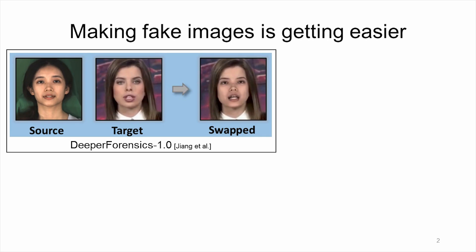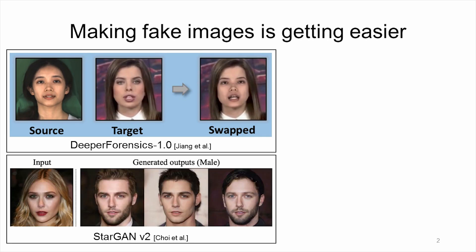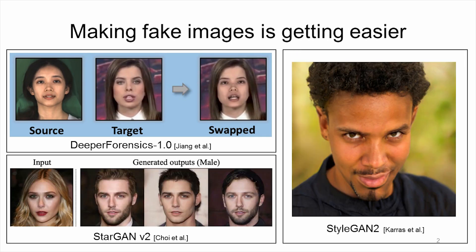We've been seeing lots of exciting ways to manipulate images with CNNs, but this leads to a dilemma. As such methods get better, it becomes easier and easier for people to maliciously make fake images. For example, just in these proceedings, we have methods to swap faces, change attributes, or even generate completely new faces.